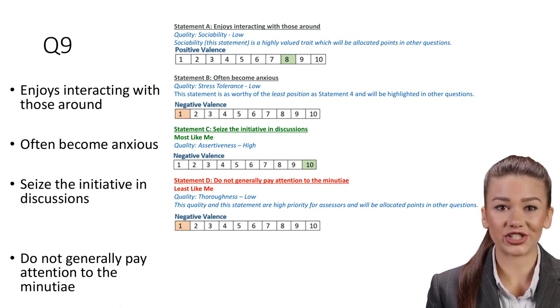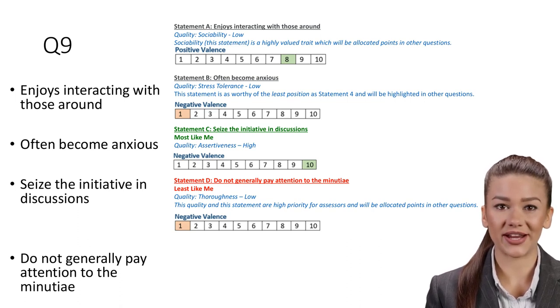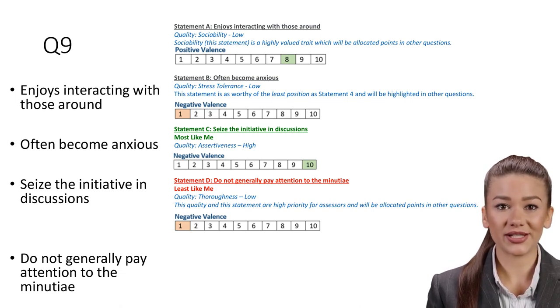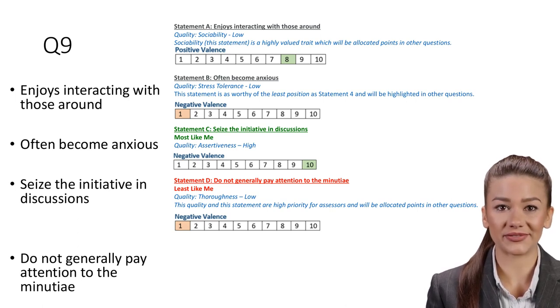Statement C: Seize the initiative in discussions. Most like me. Quality: Assertiveness high. Learning how to become predictively assertive in the workplace is crucial to career progression. Assertiveness helps you earn the respect of your peers and make sure your point of view gets heard and team projects stay on track. It is the effective middle ground between aggressiveness and passivity that sets up a candidate for success.